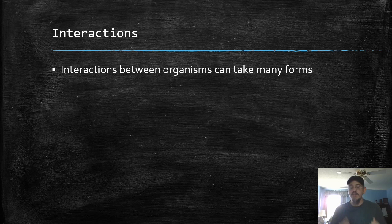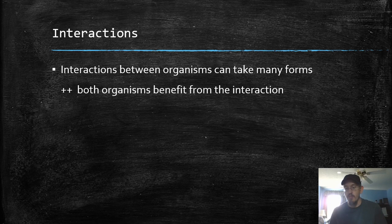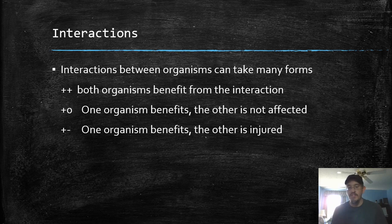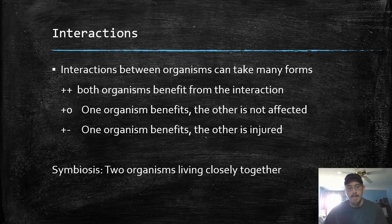When organisms are interacting in a habitat — not just those with the same niche, but organisms in general — interactions can take a number of forms. Plus-plus interactions are when organisms both benefit from the interaction. Plus-zero is when one organism benefits but the other is unaffected. And plus-minus is when one benefits and one is injured. See if you can think of examples of these kinds of relationships before I move on.